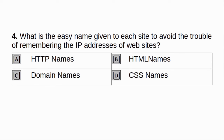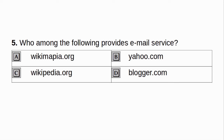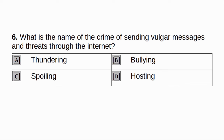What is the easy name given to each site to avoid the trouble of remembering the IP address of websites? A. HTTP Names. B. HTML Names. C. Domain Names. D. CSS Names. Answer: C. Domain Names. Who among the following provides email service? A. wikimapia.org. B. Yahoo.com. C. Wikipedia.org. D. Blogger.com. Answer: B. Yahoo.com.